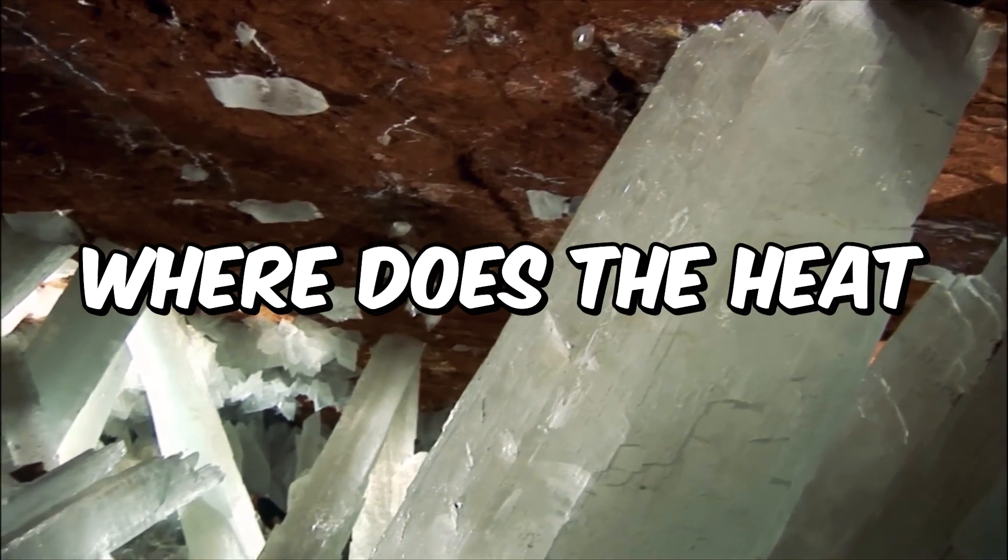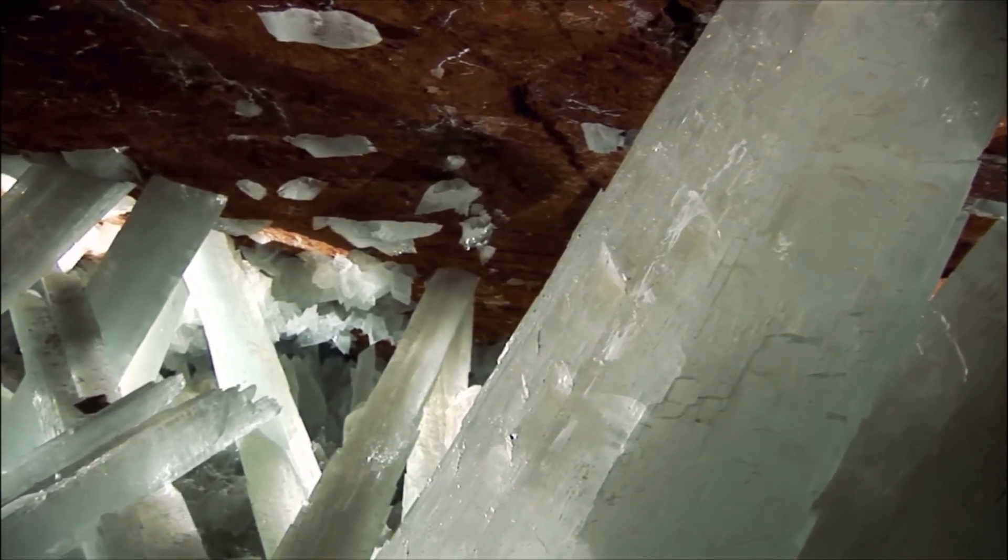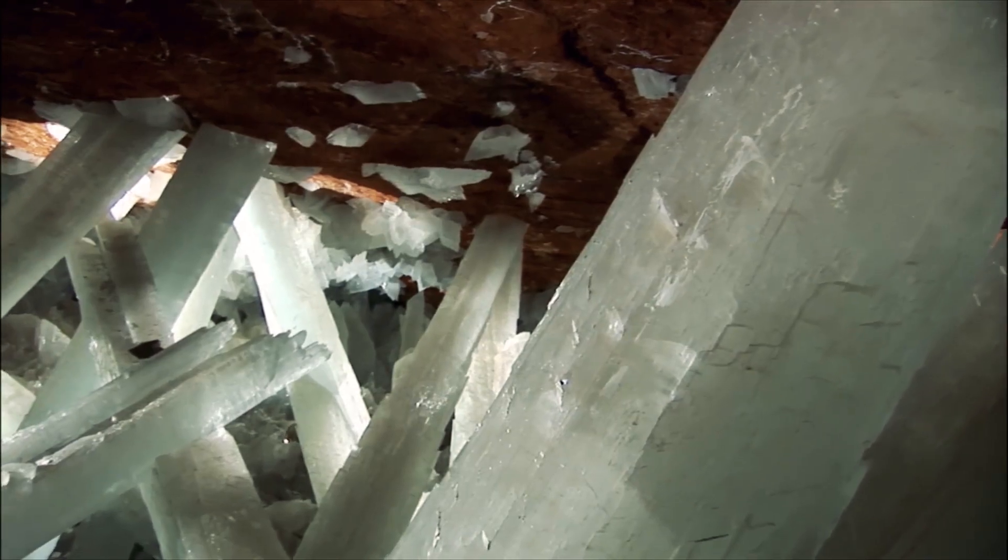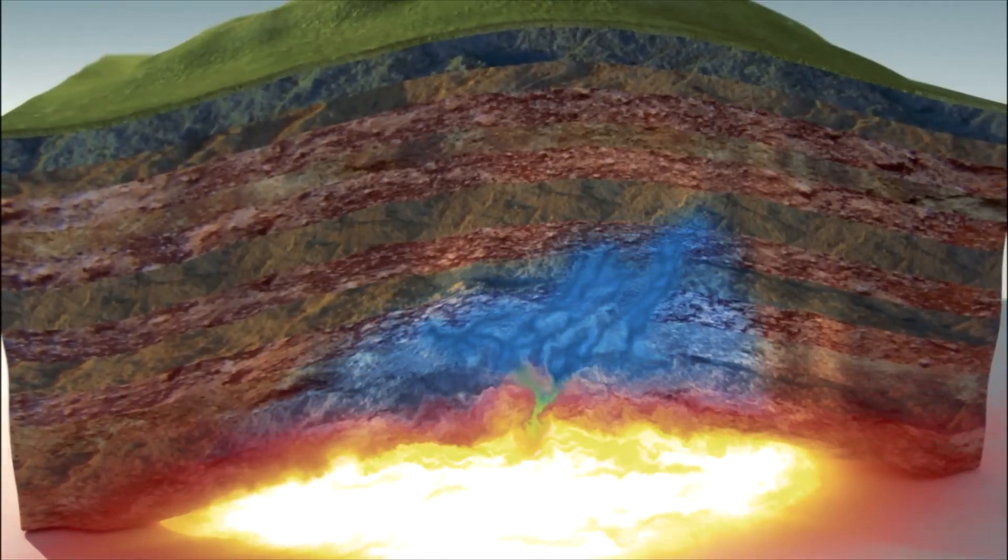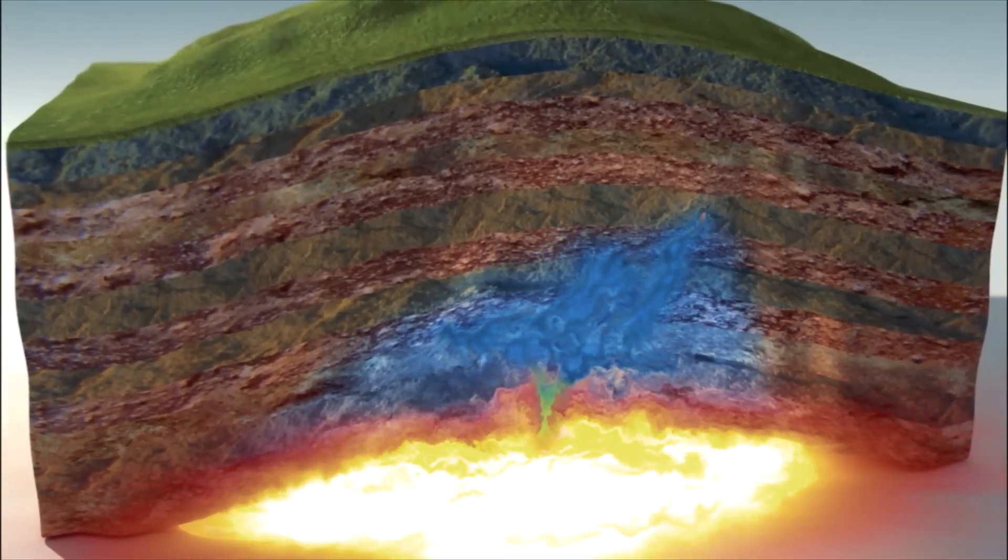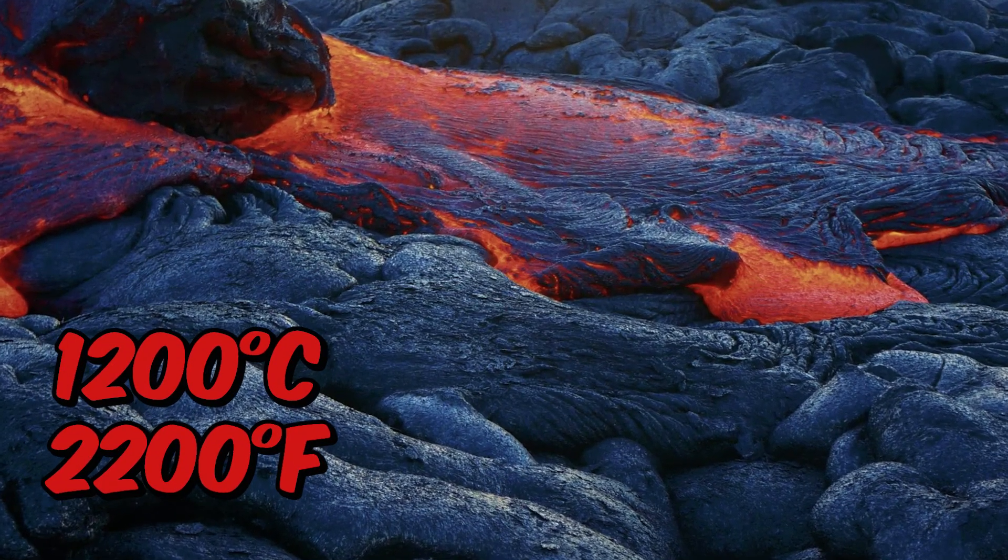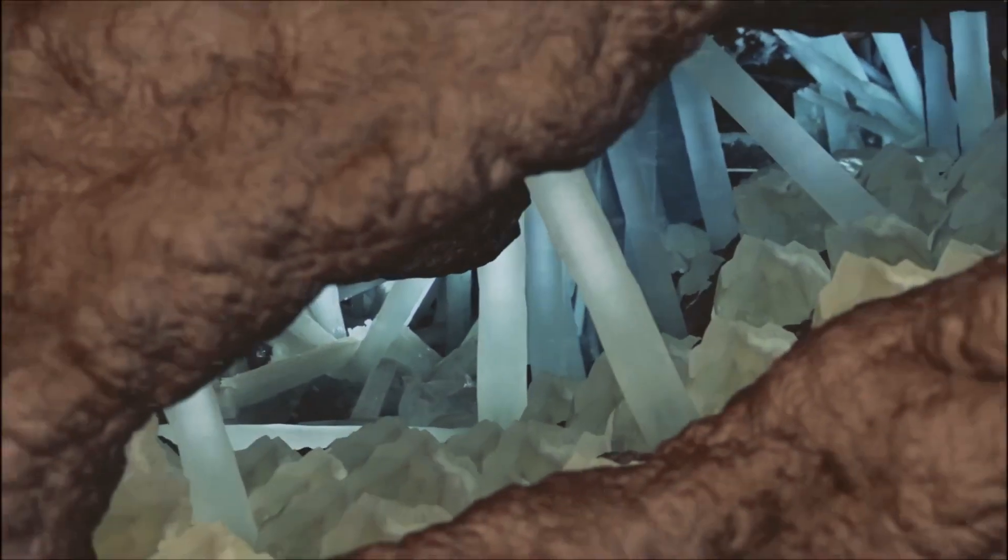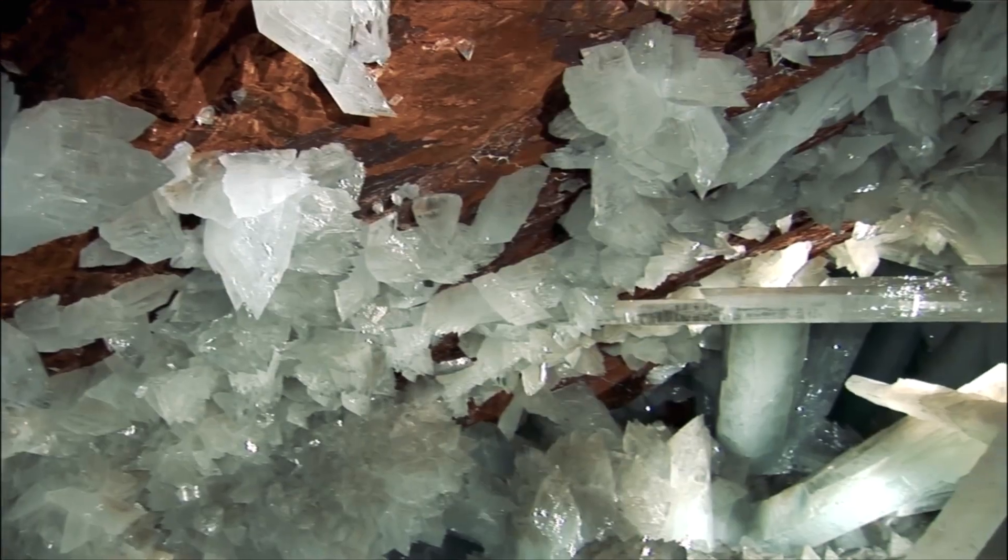So where does the heat come from? The crystal cave in Mexico is really hot because it's close to underground lava. Lava is melted rock from deep inside the earth and is very hot. Also, the cave is deep underground, where the earth's heat gets trapped. This makes the air inside the cave very warm and wet.